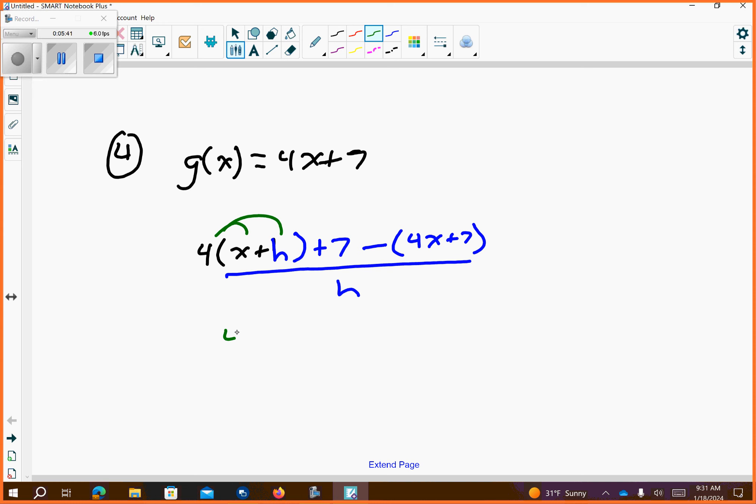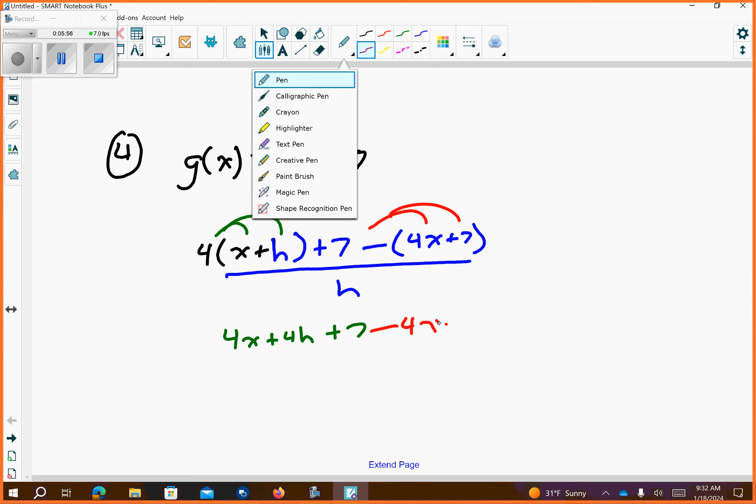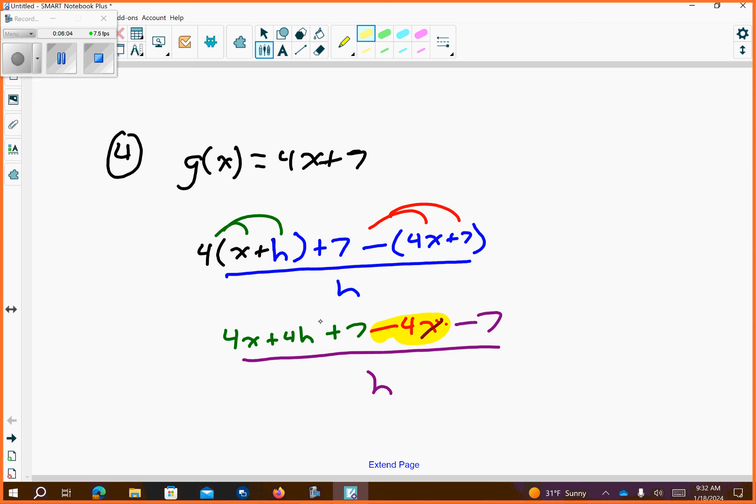So I'll go ahead and do the math here. Distribute here. That's going to give me 4x plus 4h plus 7. And then I have to distribute negative over the parentheses. It's all going to be over h. So then you say, okay, I have some like terms here.